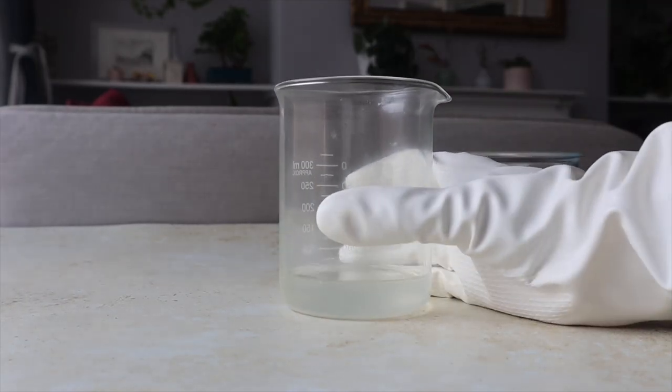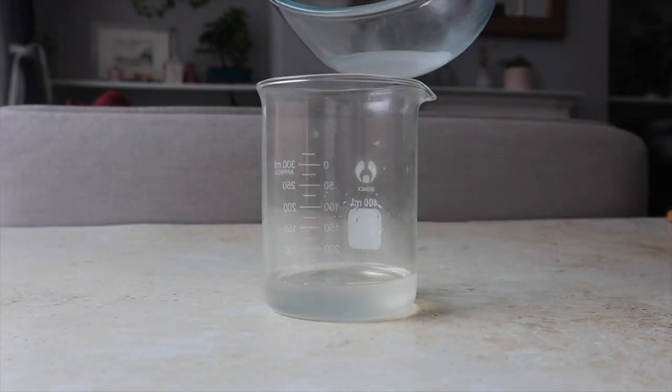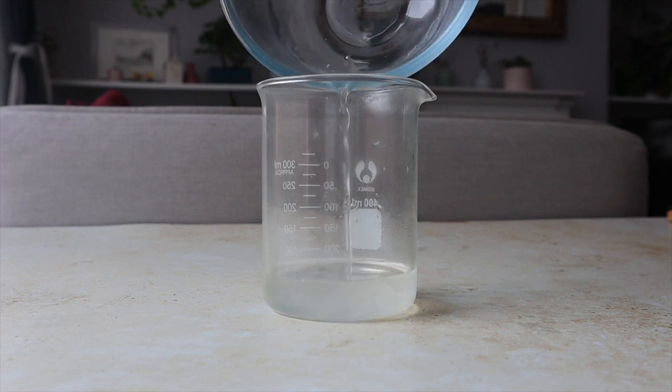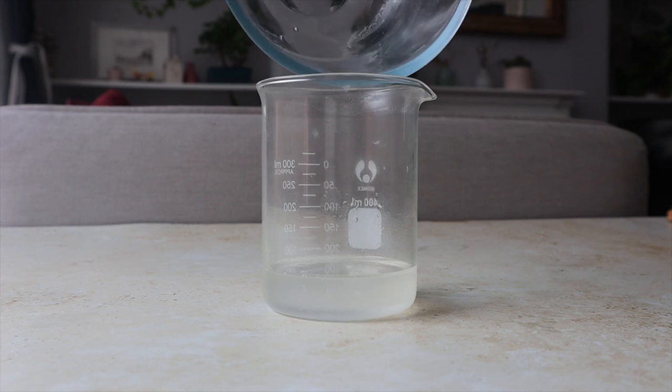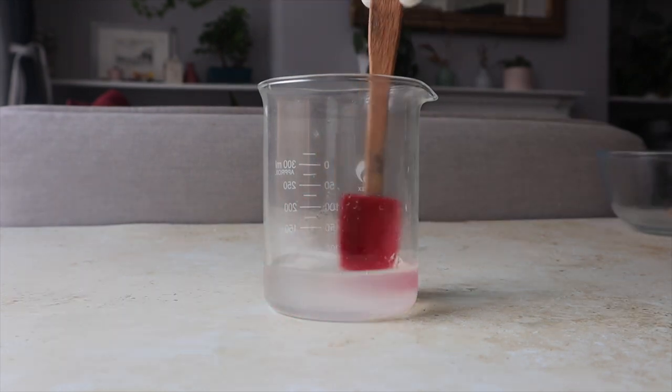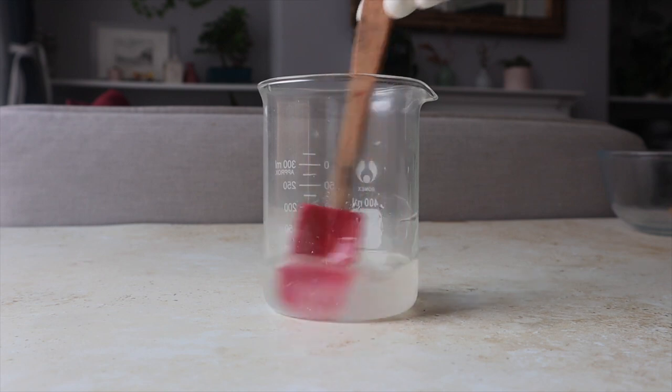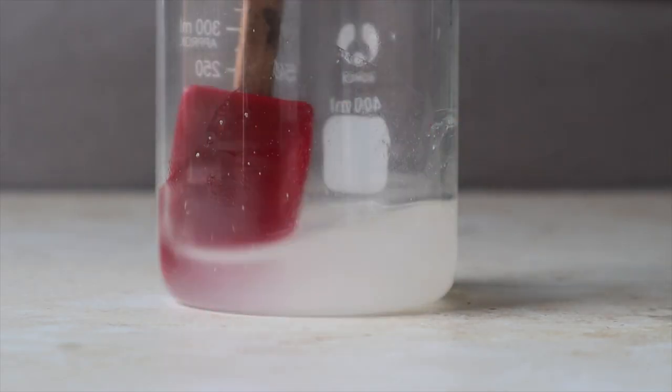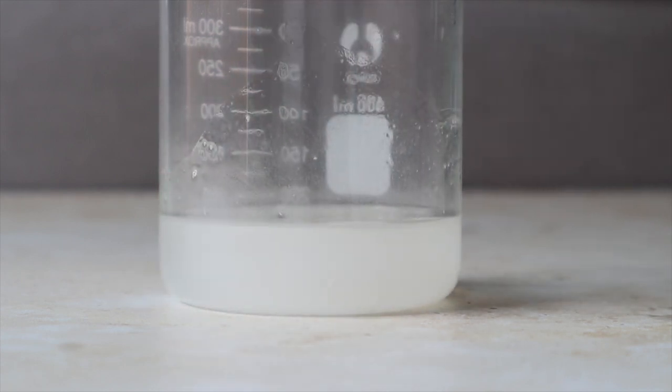Once we have reached this temperature in both our lye solution and melted coconut oil we can slowly pour the lye solution into our coconut oil. As soon as the lye solution hits the coconut oil and we move the mix around with the spatula we start a process called emulsification where the lye solution is binding with the oil and transforming it into soap. It's pure magic.